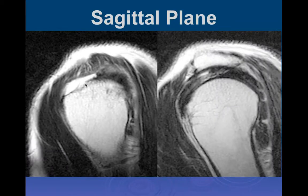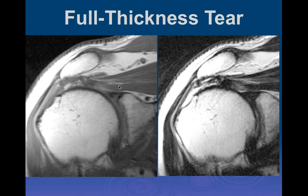I like to measure these on the T2 non-fat-suppressed images—the anterior-posterior diameter in the sagittal plane as well as the lateral diameter in the oblique coronal plane—to get the size of the tendon, and then state exactly where it's located. The vast majority of these are going to be at the anterior insertion on the footplate—that's where they start.